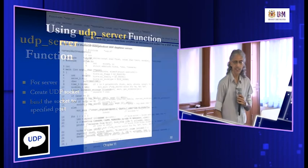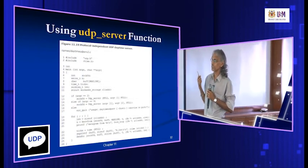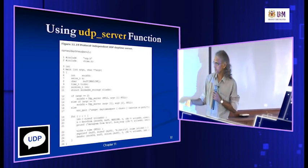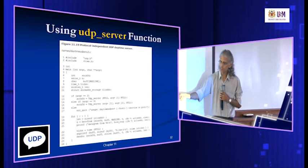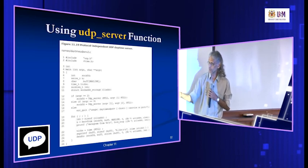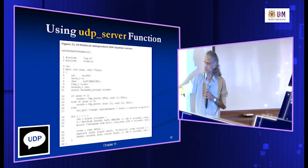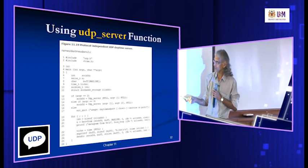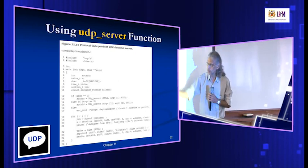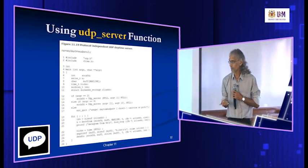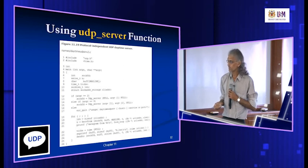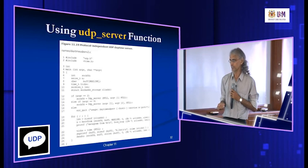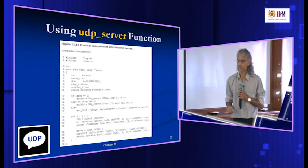The server side code becomes very simple. The daytime UDP server calls the UDP server function with either host name and service name, or just service name. The server waits for one byte of datagram from the client, then prepares the current time and date and sends it via the UDP socket using sendto. We use recvfrom and sendto instead of read and write. Otherwise the logic is the same.